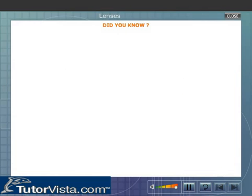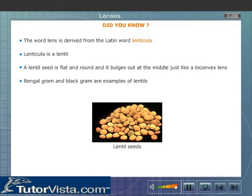Did you know? The word lens is derived from the Latin word lenticula. Lenticula is a lentil. A lentil seed is flat and round and it bulges out at the middle just like a biconvex lens. Bengal gram and black gram are examples of lentils.